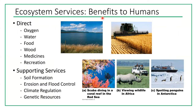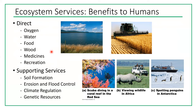The benefits we humans get from ecosystems include direct benefits — oxygen, water, food, wood, medicine, and recreation — and supporting services such as soil formation, erosion and flood control, climate regulation, and genetic resources. Oxygen comes from photosynthesis, and many medicines come from plants. All of these are important in our lives and provide benefits to humans.